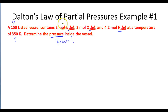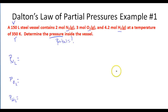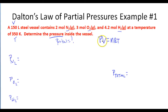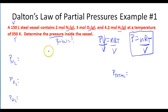To solve this, we calculate the pressure that each individual gas exerts: first nitrogen, then oxygen, then hydrogen. Once we figure those out, we add them to get the total pressure. Starting with the ideal gas law PV = NRT, solving for P gives us P = NRT / V. This is the formula we'll use for each individual gas.